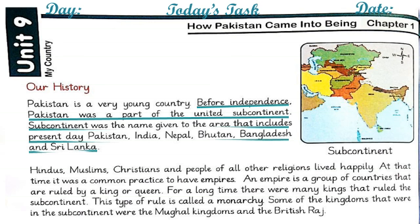Let's underline these lines. Hindus, Muslims, Christians, and people of all other religions lived happily at that time. It was a common practice to have empires. An empire is a group of countries that are ruled by a king or queen — a state or group of states under the rule of one leader.